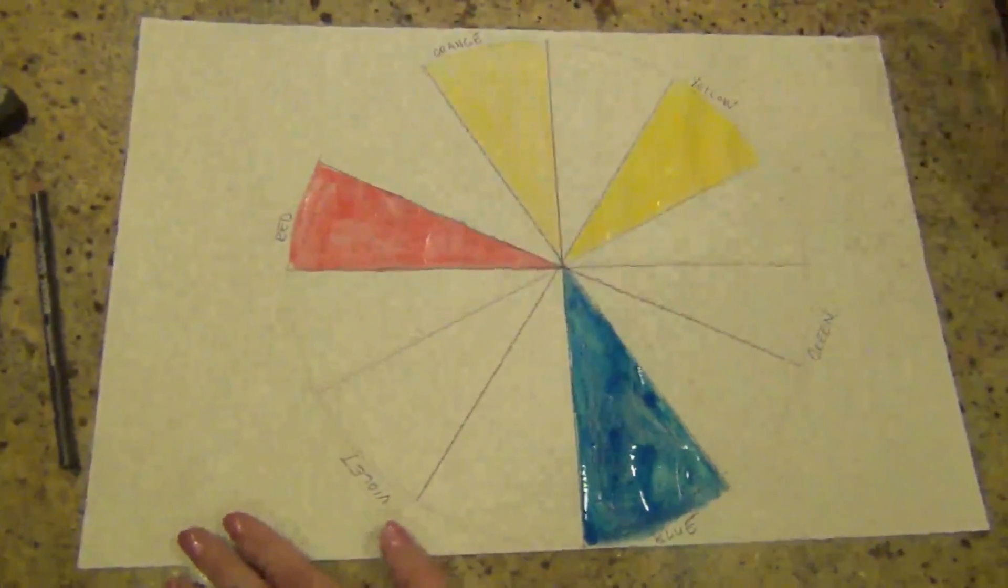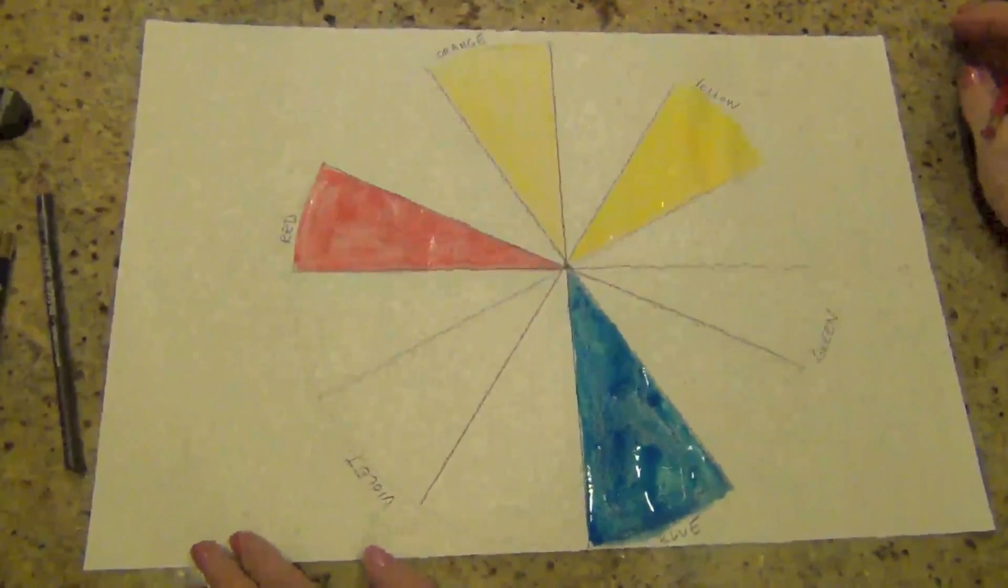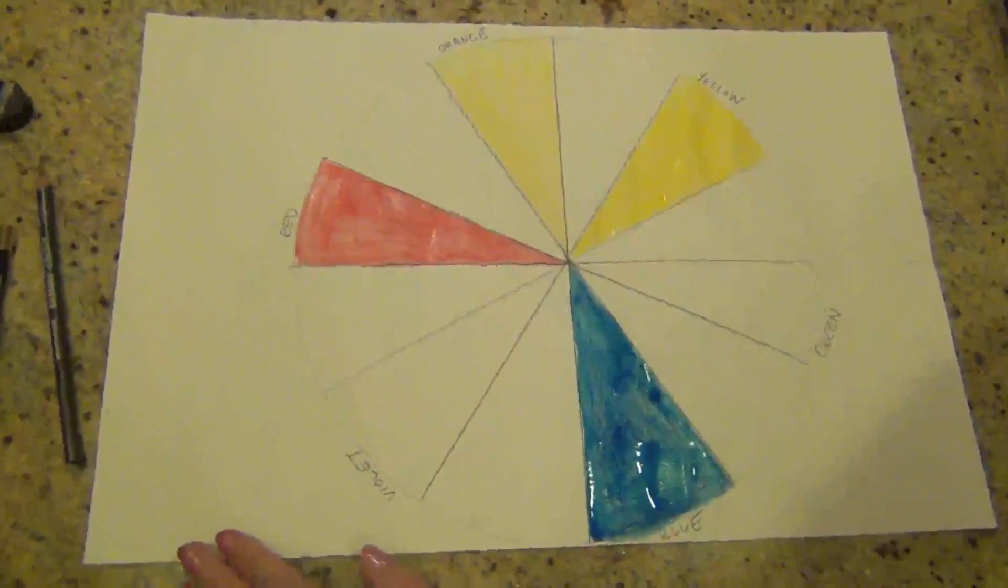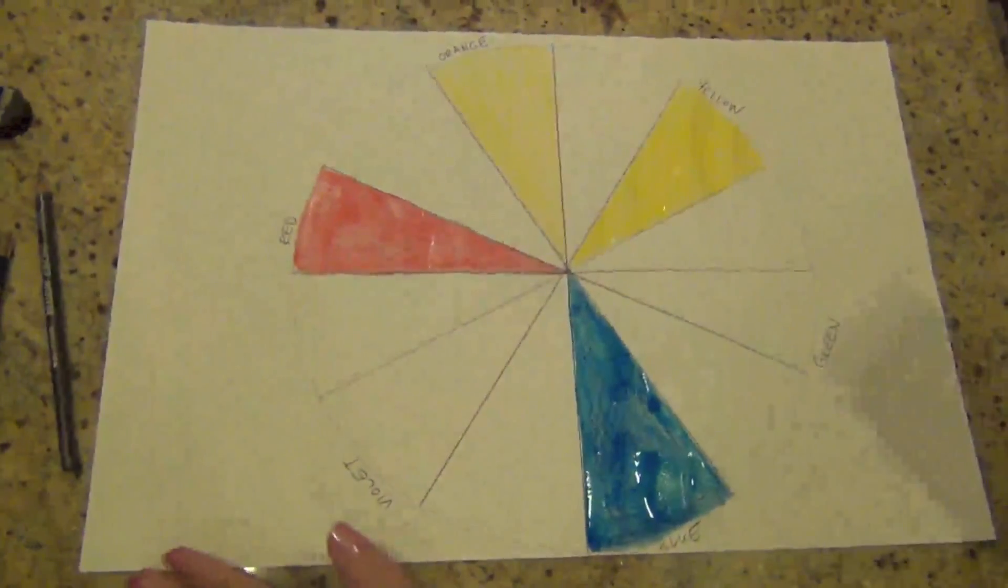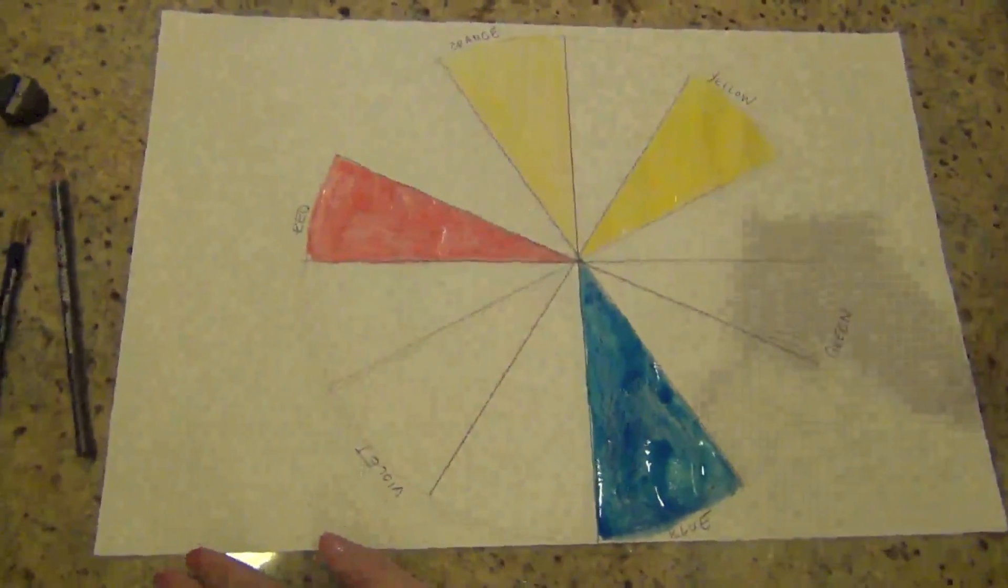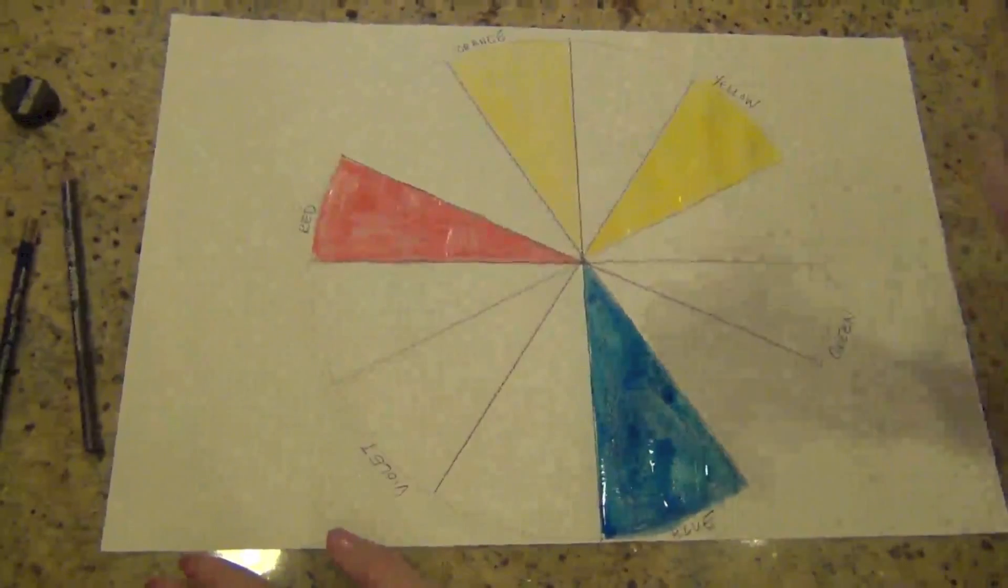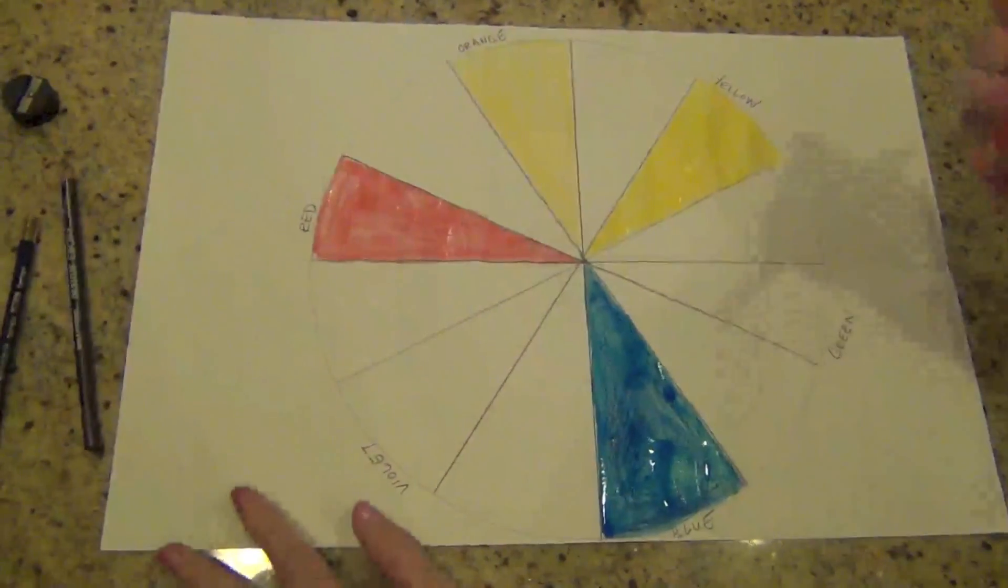All right, so I finished my primary colors and I actually dumped out my water and rinsed it out. After I use the blue, the blue is going to contaminate your water the most. So always use your darkest blue last, and then rinse out your water and your brush.